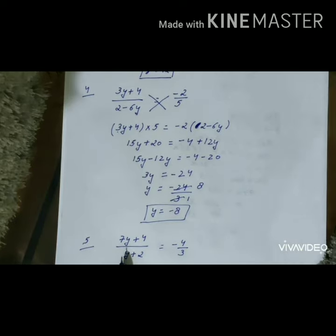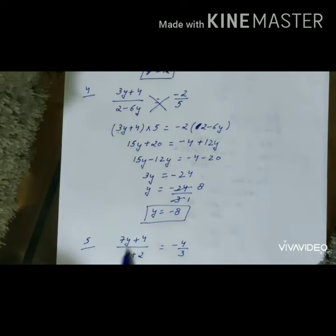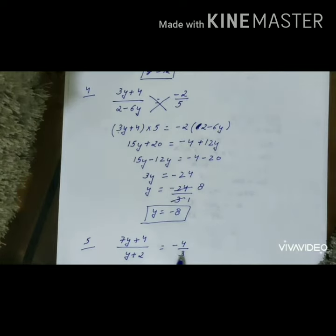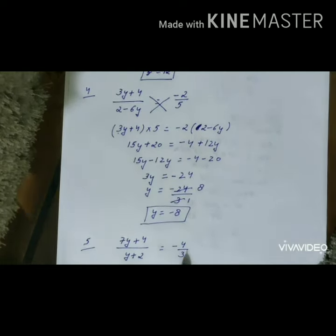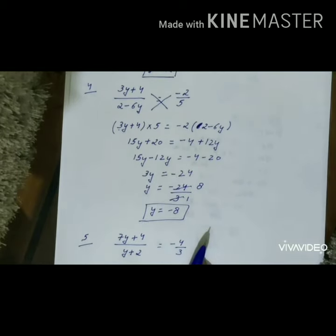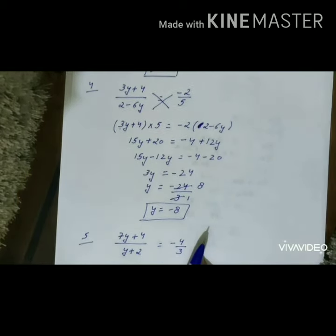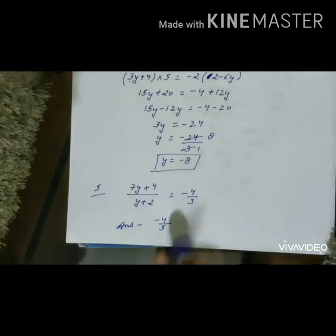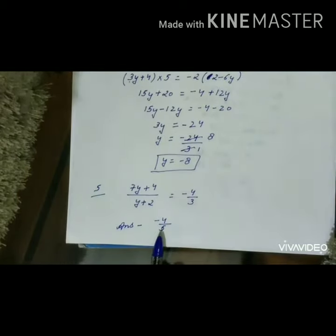Now question number 5 — (7y + 4) / (y + 2) = -4/3 — is similar to our previous questions, so I am giving it to you as homework. Try to solve it. The answer to this question is -4/5.